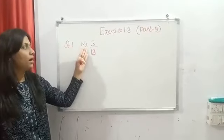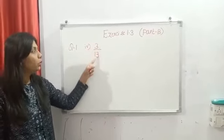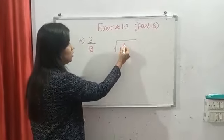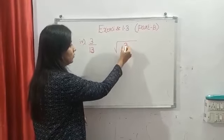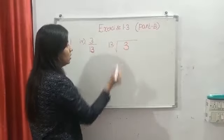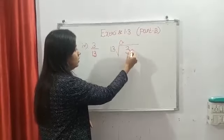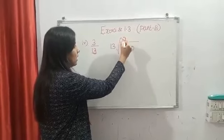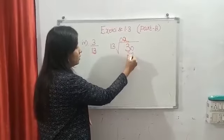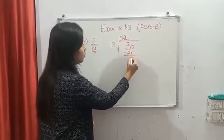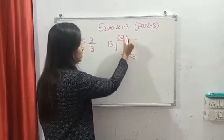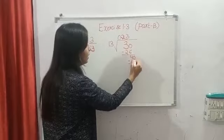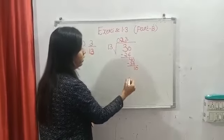From question number 1, fourth part, you have to divide 3 by 13 and say which type of decimal representation it is. So it is 3 divided by 13. First we will put one decimal: 0. 13 times 2 is 26, 30 minus 26 is 4. So you will put one zero here. 13 times 3 is 39, 40 minus 39 is 1.